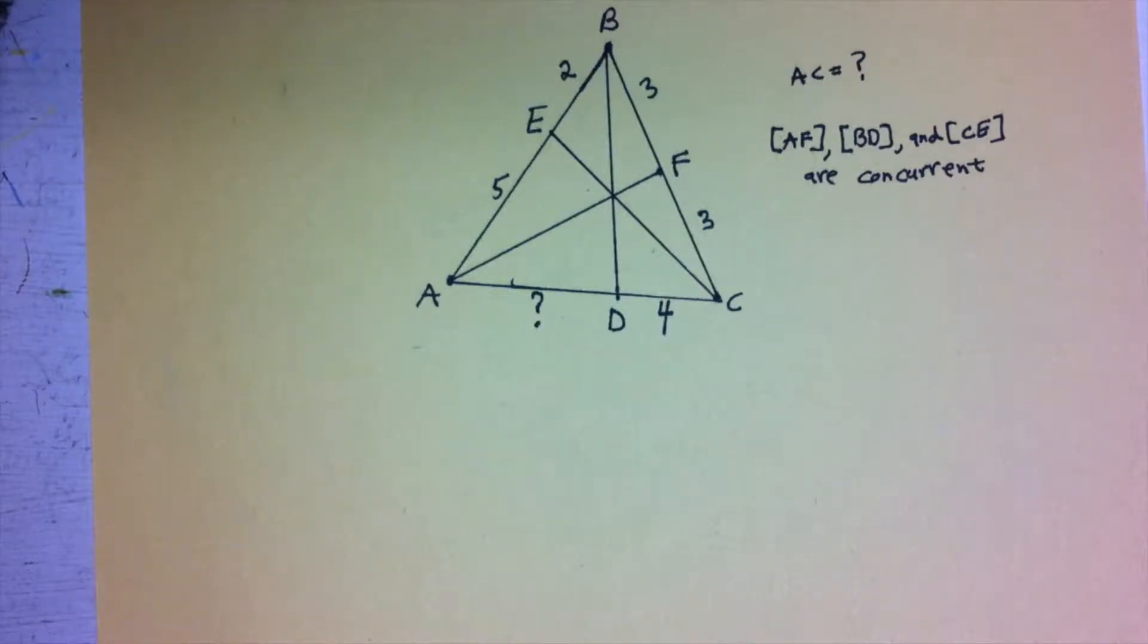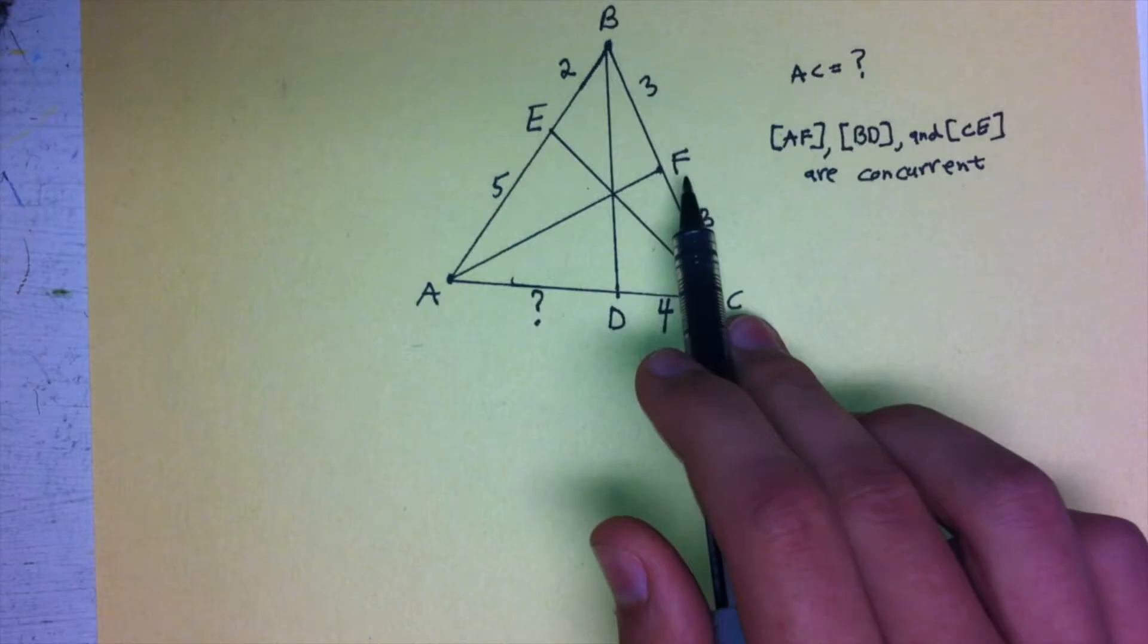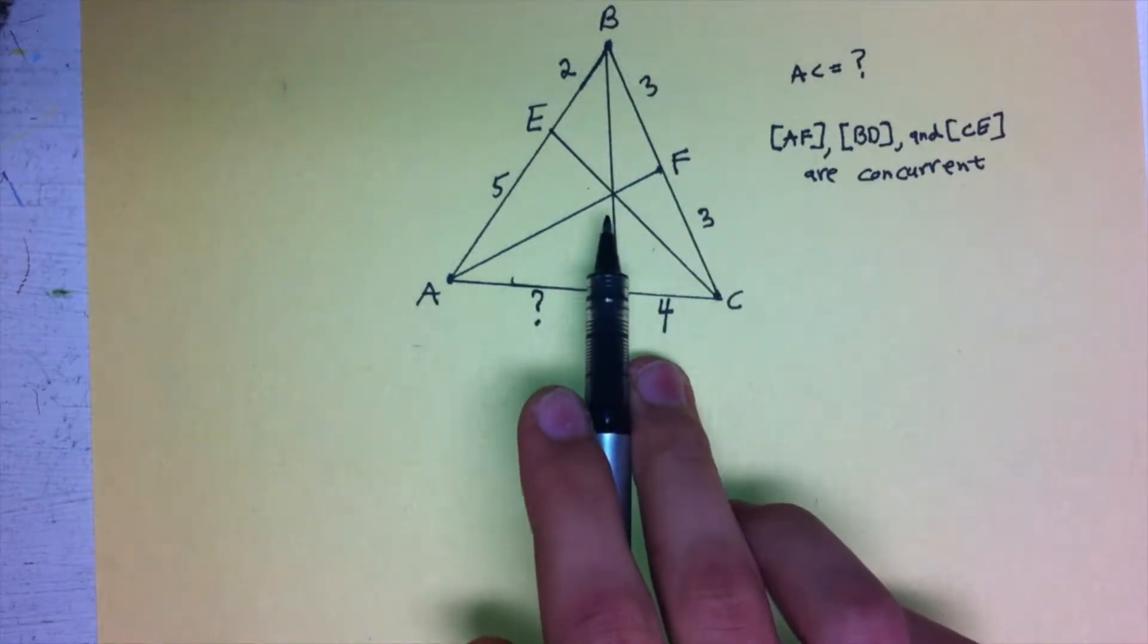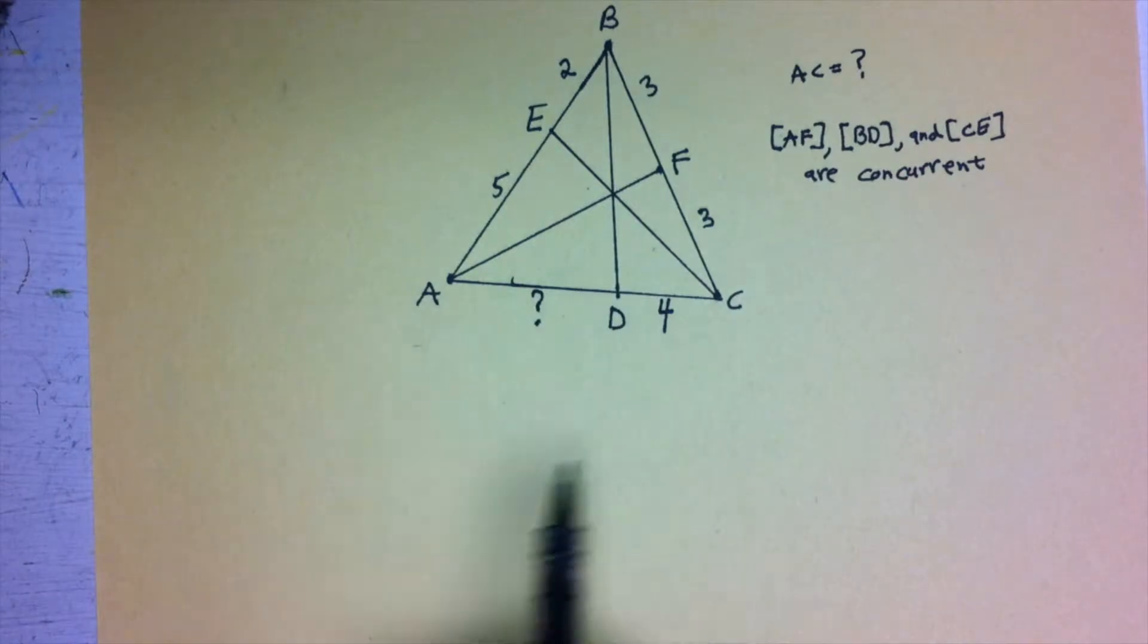In this video, we're going to be doing an example problem that uses Ceva's Theorem. The problem tells us that lines AF, BD, and CE are concurrent, and because it tells us that, we know we can use Ceva's Theorem to solve this problem.